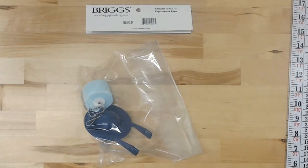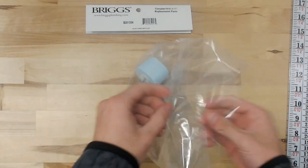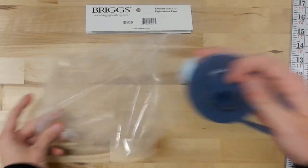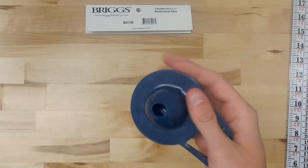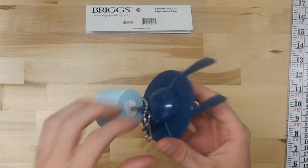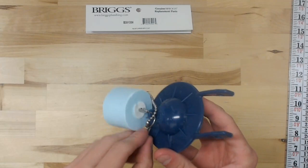This is a look at the Genuine Briggs B351-304 Flapper. This flapper comes complete with the chain hook and the float.